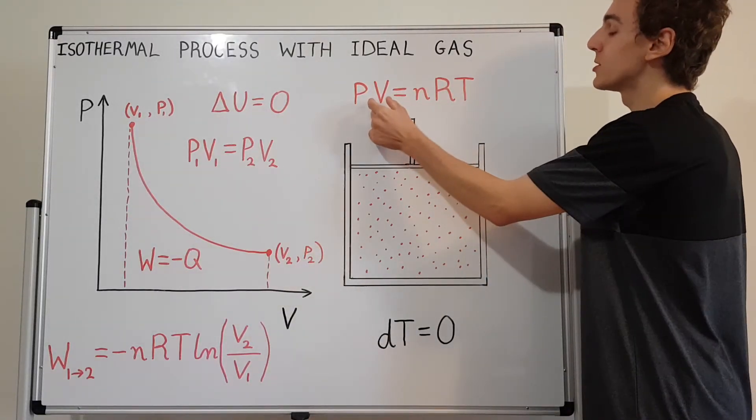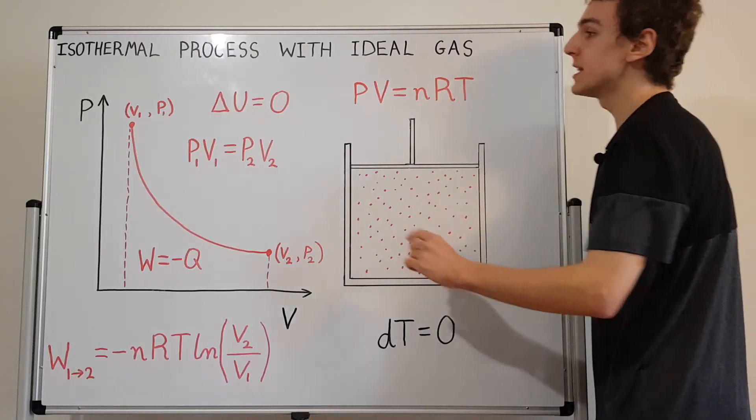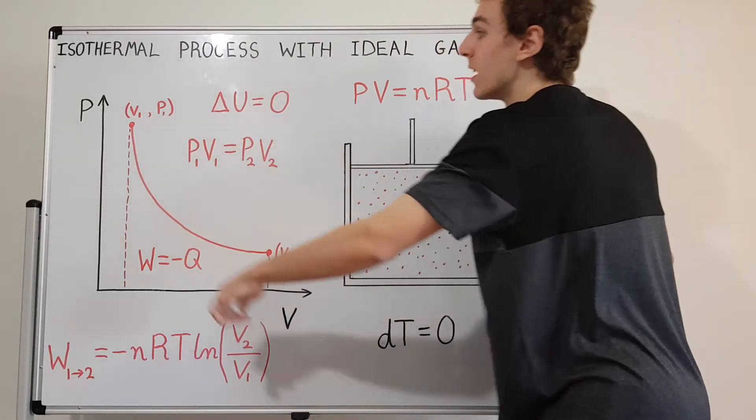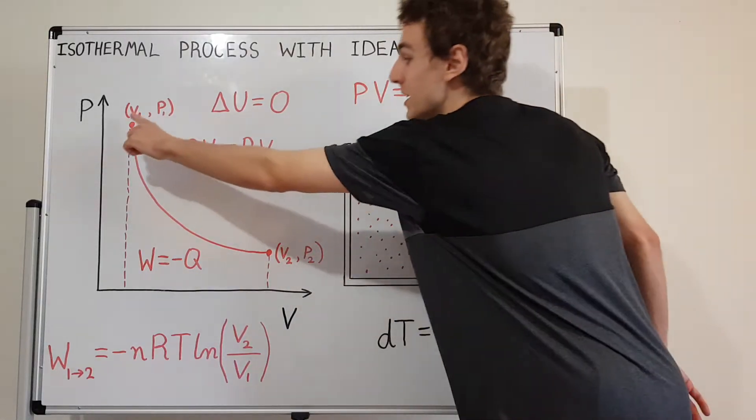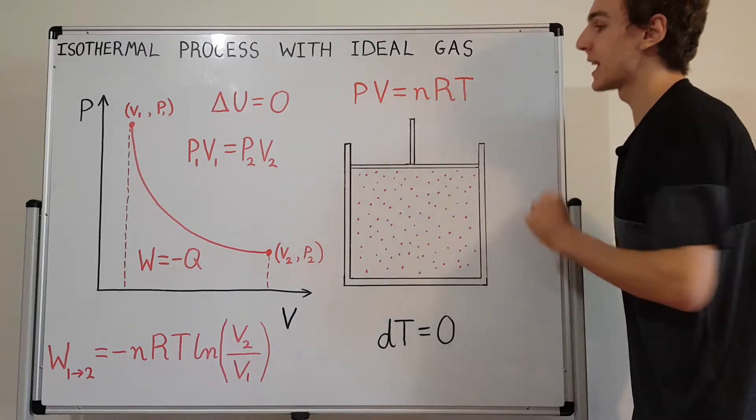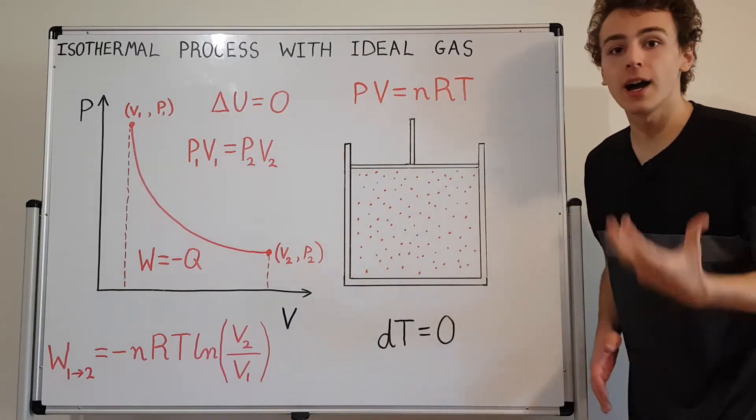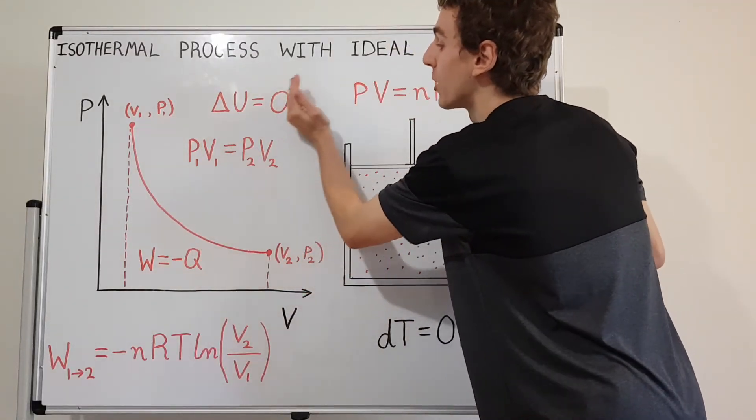If we rearrange this equation, if we divide both sides by V, then we have a constant divided by V. So this is P as a function of V equals 1 on V. So 1 on V is actually this function over here. And if you think about it, the constant we're scaling it by is related to the temperature.